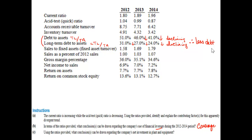The other thing this points to is return on common stockholders' equity, which is net income over shareholders' equity. If total liabilities are decreasing in their proportionality to assets, that means shareholders' equity is increasing. You can see this happening because the trend is down for return on common shareholders' equity, which means shareholders' equity is growing relative to the growth in net income.